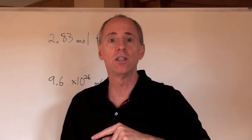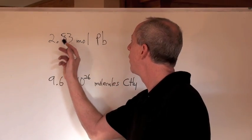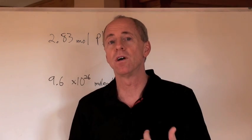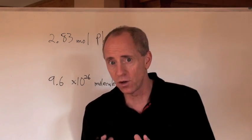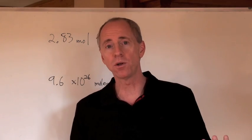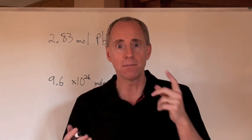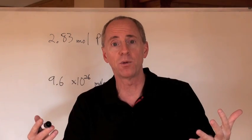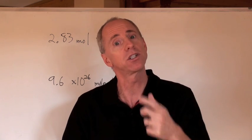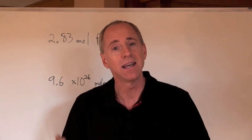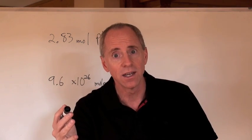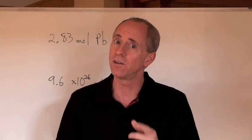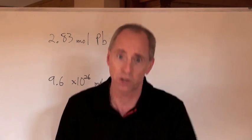So let's say somebody says to you: you've got 2.83 moles of lead — how many atoms of lead do you have? 6.02 times 10 to the 23 is one mole. So if you've got 2.83 moles, that's got to be bigger than 6.02 times 10 to the 23. Make sure that when you look at your answer in the end, you see if it makes common sense. If you divided or multiplied the wrong way, you'll find out just by using common sense. Trust yourself.